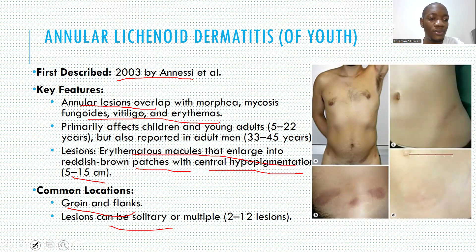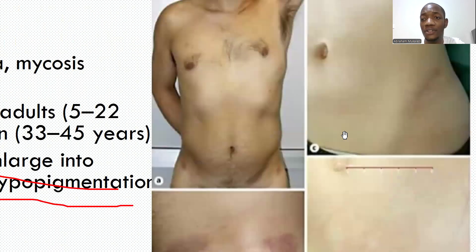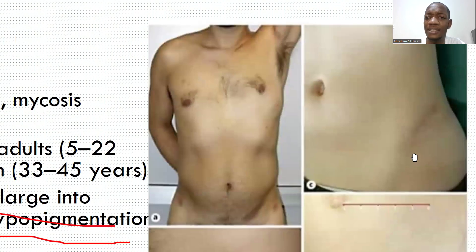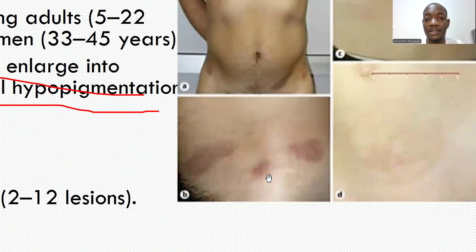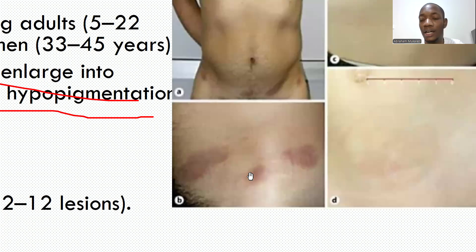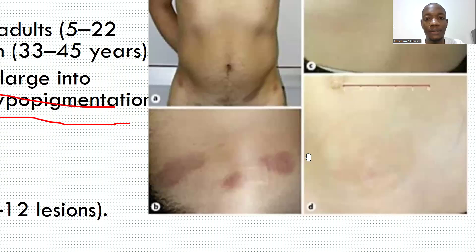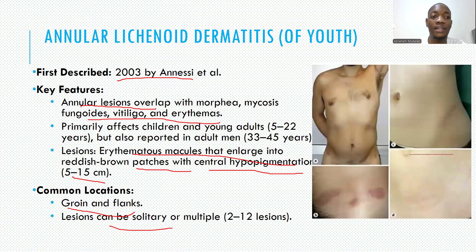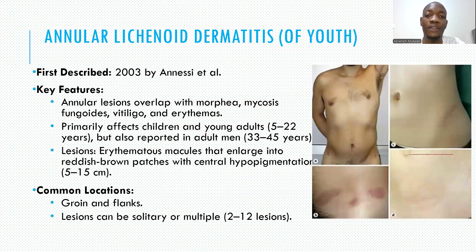Common locations include the groin and the flanks. Lesions can be either solitary or multiple, with individuals having up to 12 lesions. The pictures for these conditions are not very clear, as it has limited literature since it was just recently described as a new entity. In the pictures, you can see atrophic annular plaques, and it can come after vitiligo, mycosis fungoides, or morphea as those conditions resolve.